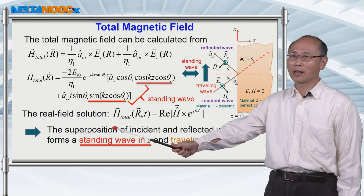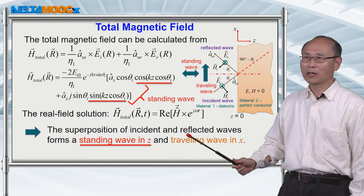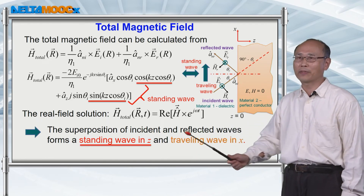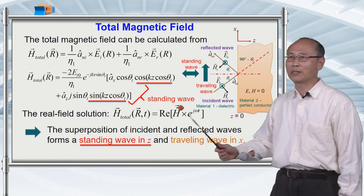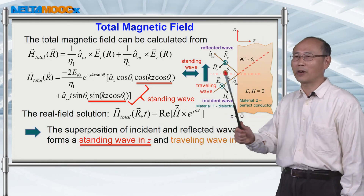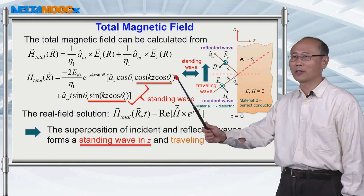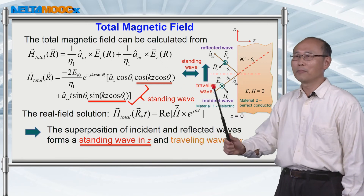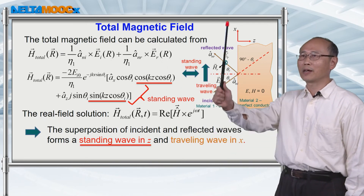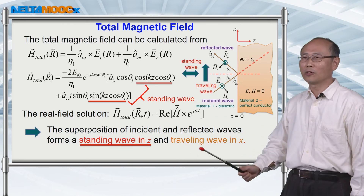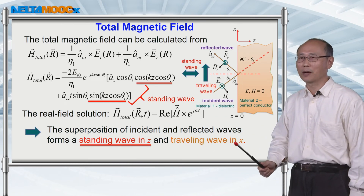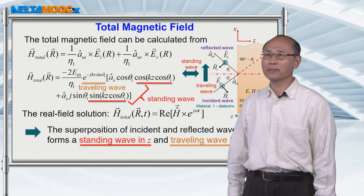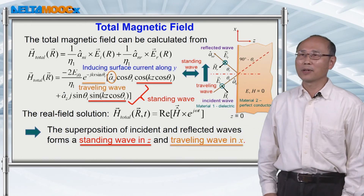In summary, the superposition of the incident and reflected waves forms a standing wave in the z direction — this is not a surprise since the wave reflects in that direction — but the energy still propagates along the x direction. Therefore, you have a traveling wave component propagating in the x direction.